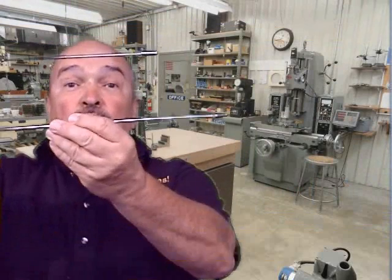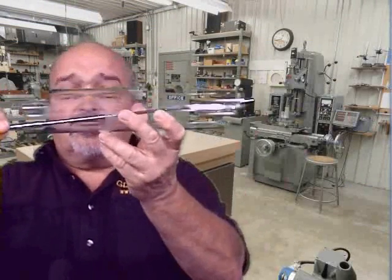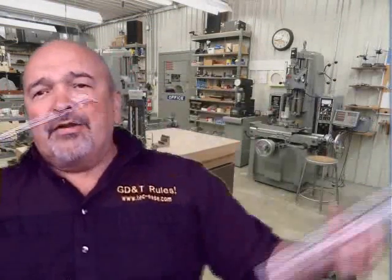Originally, straightness was applied to surfaces that contain straight line elements. The tolerance zone was two parallel lines. Later, it was applied to the axis of a cylindrical feature, and the tolerance zone became cylindrical, which made sense. Then in the 1982 revision of the Y14.5 standard, as an extension of this principle, we could apply straightness to a width, and the tolerance zone became two parallel planes.